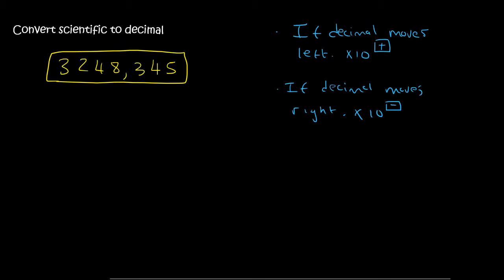And so we said that we always want the decimal to be after the first number, so it'll be 3,248,345. And so the decimal was over here, and now it's moved three places to the left. And so because the decimal moved three places to the left, we would have to say times 10 to the positive three. See, because if the decimal moves left, then it was positive.